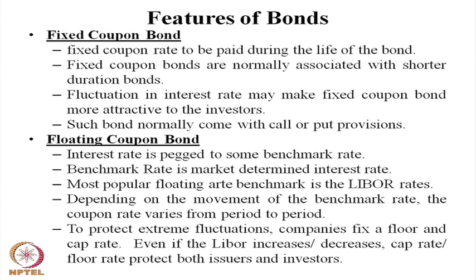Fixed coupon bonds have a coupon or interest rate that remains constant until the maturity of the bond. Fixed coupon bonds are normally associated with shorter duration bonds, because it is not easy for an issuer to fix the coupon for a longer period — we do not know what the interest rate cycle will be after 4 or 5 years. Beyond 5 years, bonds are generally issued on a floating or variable coupon basis.